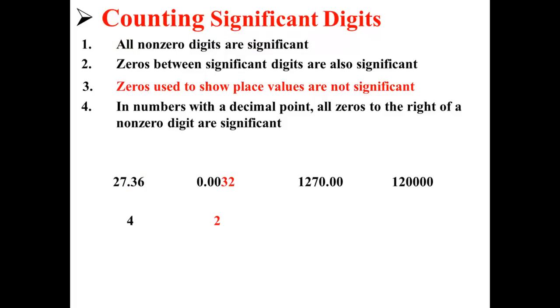0.0032 has two significant digits. Because zeros used to show place values are not significant. While three and two are non-zero digits, so they are. That is why this number has two significant digits.